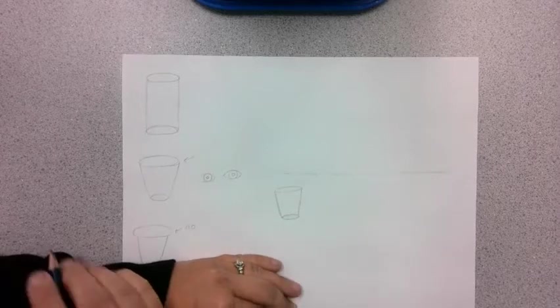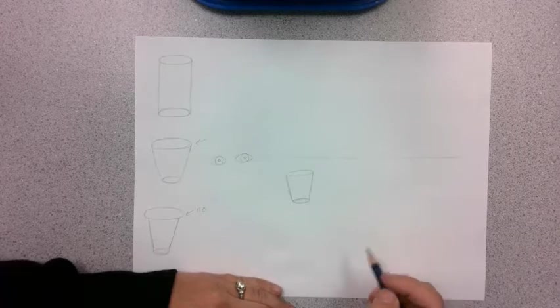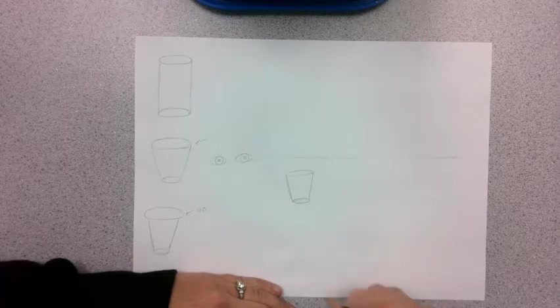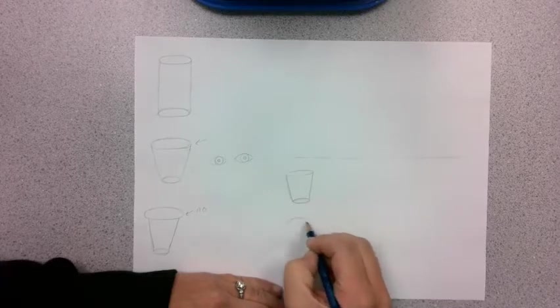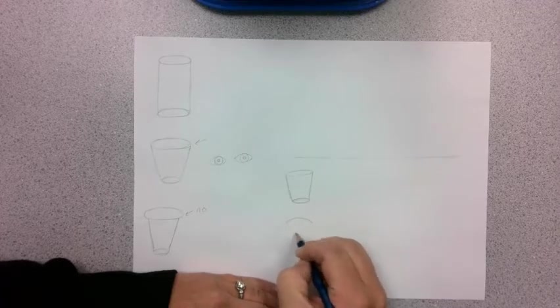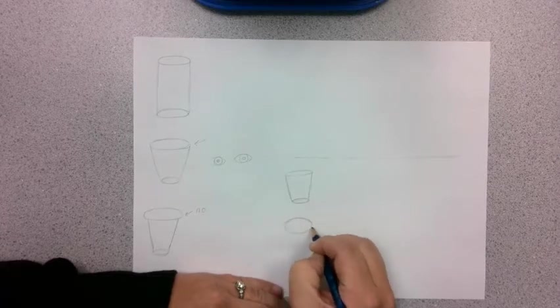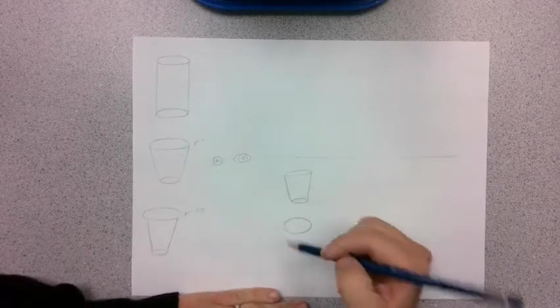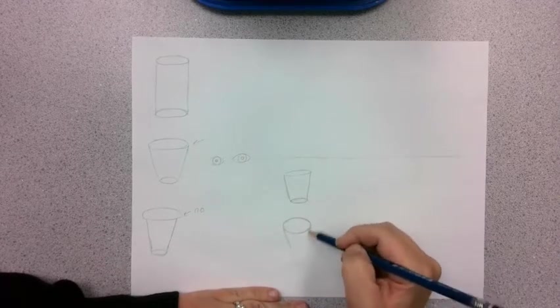If that cup were to get even lower below eye level, like I'm seeing into the cup more, I'm taller than the cup, that ellipse is going to get wider. I'm going to see into the ellipse, I'm going to see into the cup a little bit more. So my ellipse starts to get taller, and the side of my cup starts to get a little bit shorter.